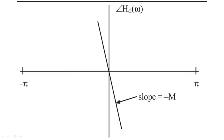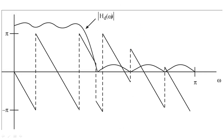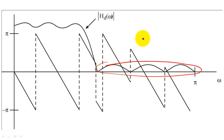In previous lectures, we showed that a filter needs linear phase in order to properly shift every cosine by the same amount. This restraint is normally stricter than what we actually need for most filters. Since we plan to remove or minimize the amplitude of frequency content in the stop band of filters, the phase of the filter in the stop band can be anything that is convenient.